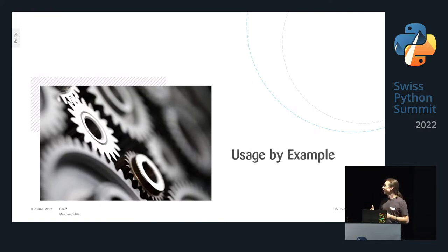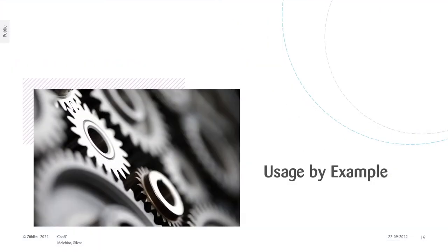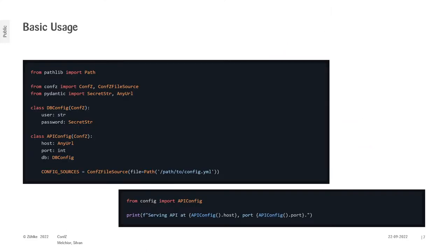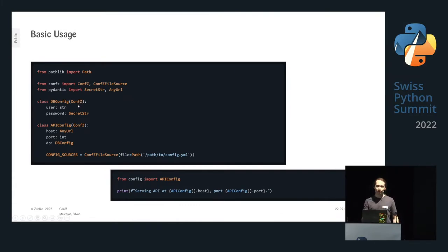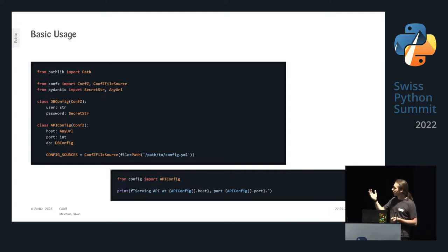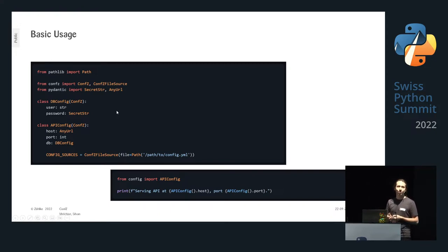Instead of a programmatic walkthrough, let's look at usage by example. Here we have a database configuration consisting of a user and a password. You define how a config looks using standard Python types like string, or more special types like the SecretString from pydantic — it's basically a string but it won't just print in plain sight, so if you accidentally dump your DB config to the console or a log file, the secret won't be exposed.